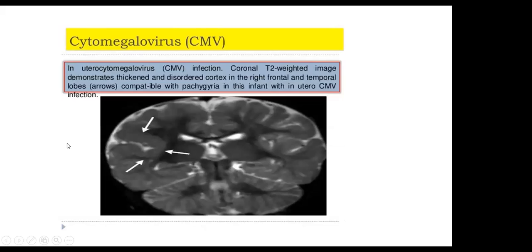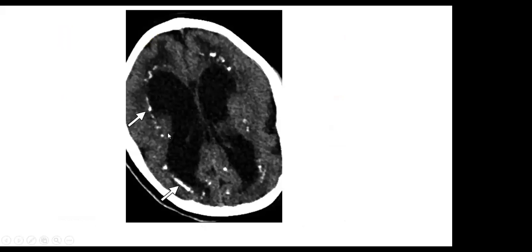Congenital cytomegalovirus infection: coronal T2 images demonstrate thickened, distorted cortex in the right frontal and temporal lobes, compatible with abnormal cortical development and delay. The child was delivered with a congenital CNS anomaly and developmental delay. In chronic cytomegalovirus infection, there is marked hydrocephalus and periventricular calcification on CT.